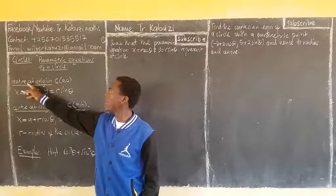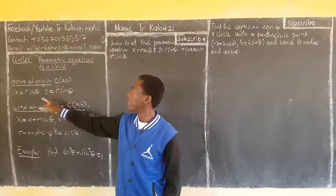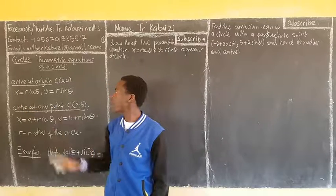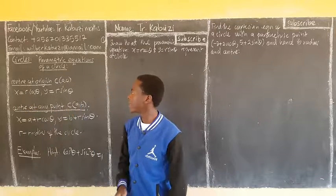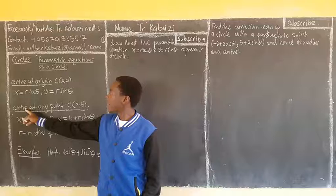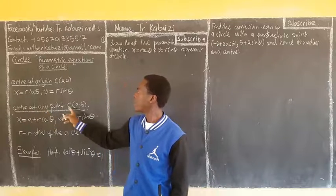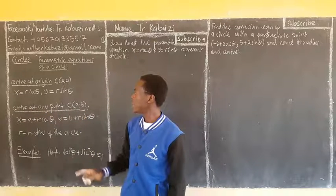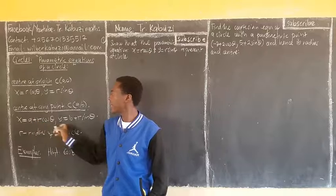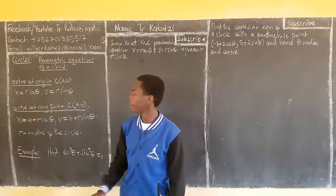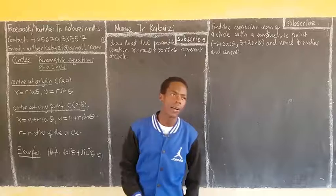When the circle is centered at the origin, its parametric equations are x equal to r cos theta, y equal to r sin theta. If the circle is having the center at any point, say C(a,b), then its parametric equations are given like this, where r is the radius of that circle.